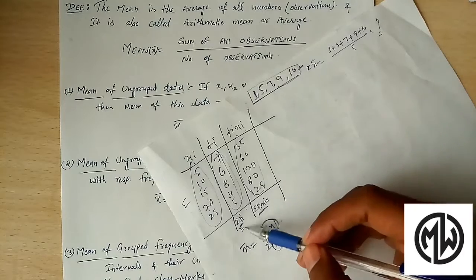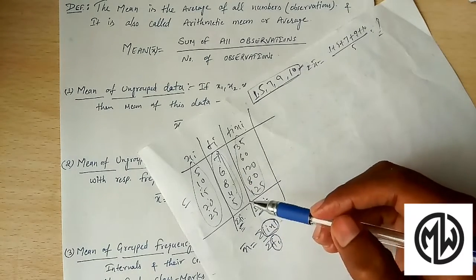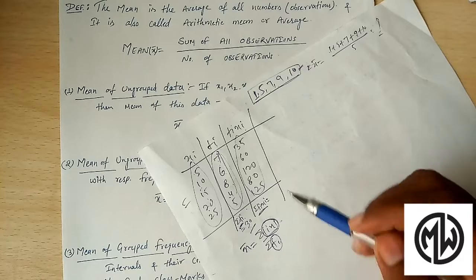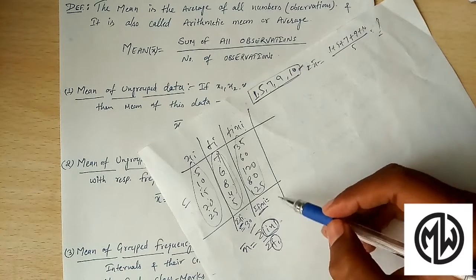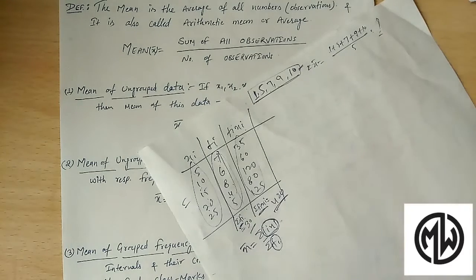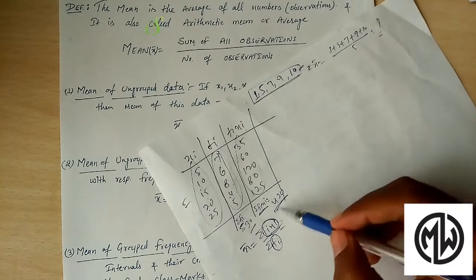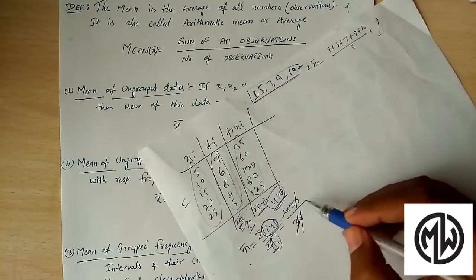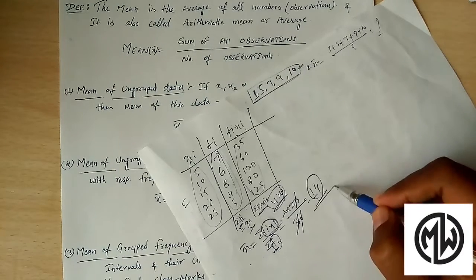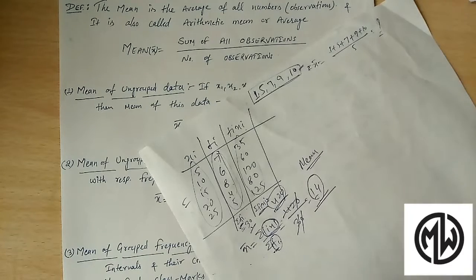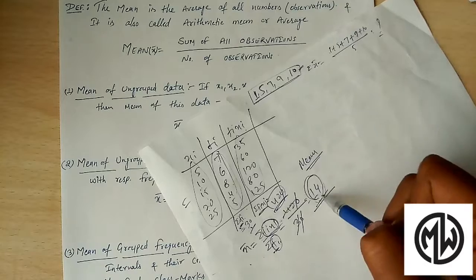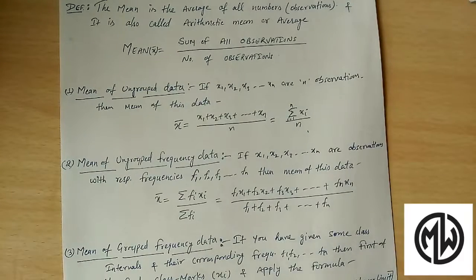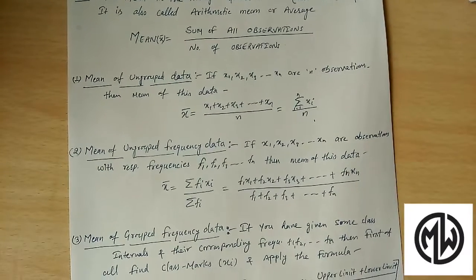Summation of fi equals 7+6+8+4+5 = 30. Summation of fi×xi equals 35+60+120+80+125 = 420. So x-bar = 420 divided by 30 = 14. Therefore, the mean of this data is 14. This mean value is the central tendency that represents the entire dataset.